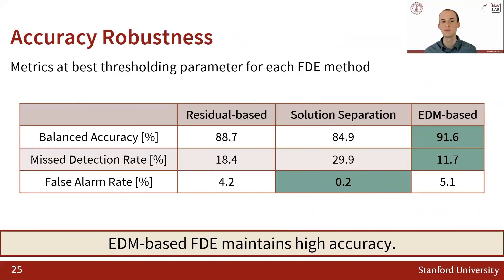This table presents accuracy results while using the larger, noisier Android dataset. Across this dataset that contains roughly 36 hours of measurements, EDM-based FDE outperforms residual-based and solution separation FDE in terms of balanced accuracy and missed detection rate, while solution separation has the lowest false alarm rate across the dataset.